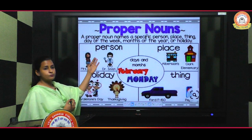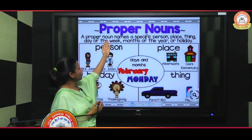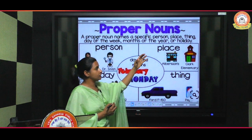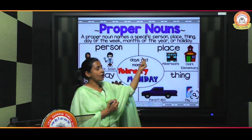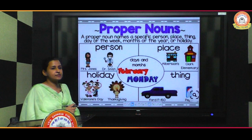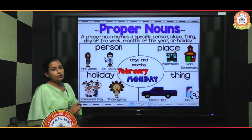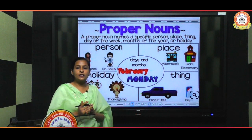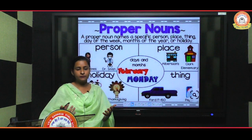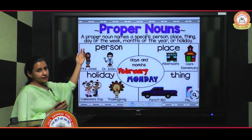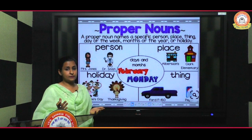Next is proper noun. What is a proper noun? A proper noun names a specific person, place, thing, day of the week, month of the year, or holiday. It is the particular name of one person, place, thing, animal, or bird. For example, 'boy' is a common noun because we use it commonly for everyone.